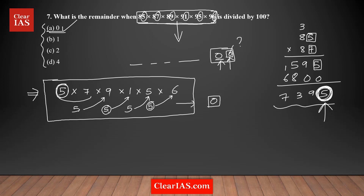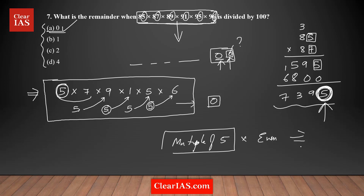Any multiple of five, when multiplied by an even number, always ends in zero. For example, 15 times 26 ends in zero. In our product, 85 ends in 5, and 96 is an even number. So 85 times 96 — and thus the entire product — definitely ends in zero. You don't need to analyze the other numbers at all. The answer is option A: the remainder is 0.